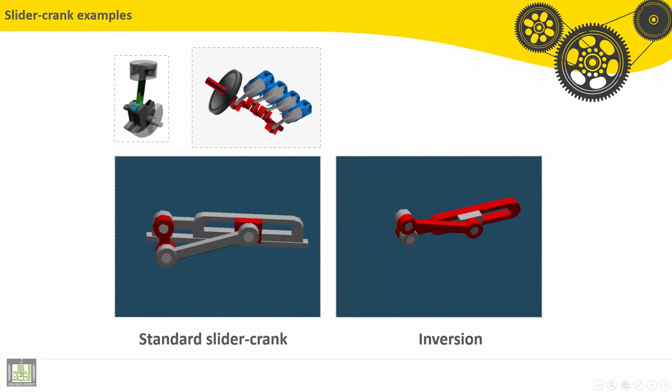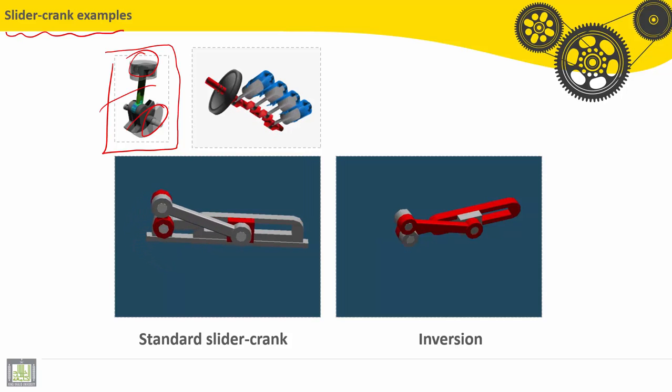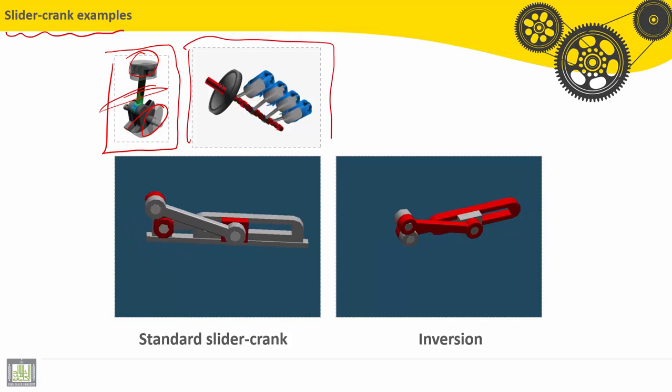Here we have the slider crank mechanism examples. So, this is a simple, or one slider crank mechanism. Here the slider, here the crank, and here the connecting rod. On this engine, we can see four pistons connected to the connecting rod, through connecting rods connected to the crankshaft.